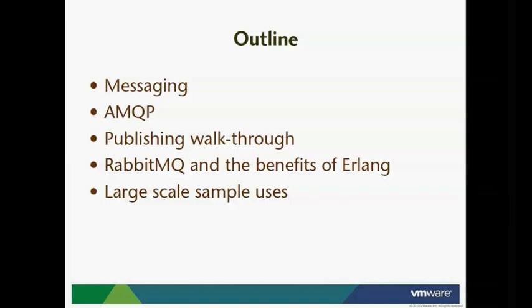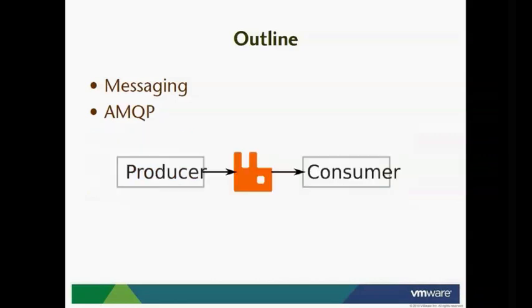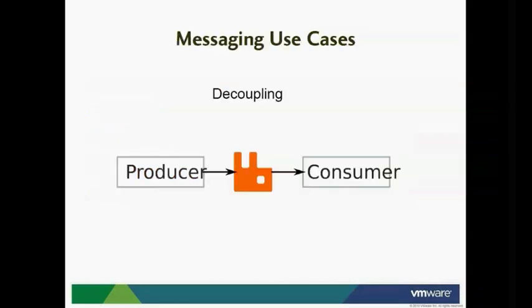So this is the most important slide — this is what we're trying to achieve. We've got a producer and a consumer, and we're trying to send messages from the one to the other. You might ask a number of questions: who's the consumer, who's the producer, what are they, and what happens if the channel becomes unavailable or interrupted?